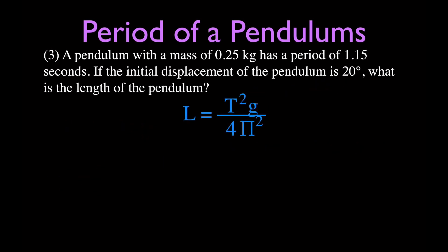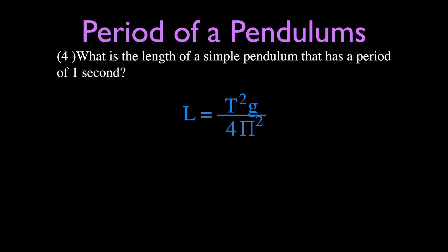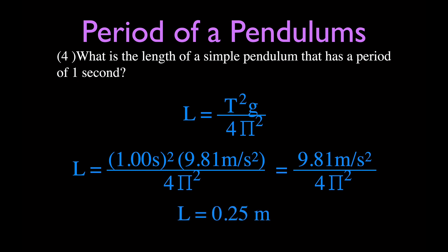Plugging in: 1.15² times 9.81, divided by 4π², gives a length of 0.33 meters. As a bonus, a pendulum with a period of exactly 1 second: since 1 squared is 1, the formula reduces to 9.81 divided by 4π², which gives approximately 0.248 meters — just about a quarter of a meter gives a pendulum with a period of exactly 1 second.